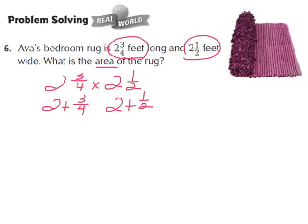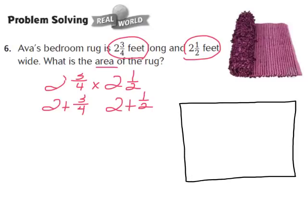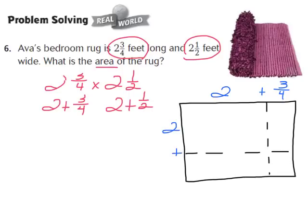Next, draw an area model and label each section. So let's draw our rectangle together. We know the rug is 2 and 3/4 feet long and 2 and 1/2 feet wide. We'll represent the length with 2 plus 3/4 along the top, and the width with 2 plus 1/2 along the side.